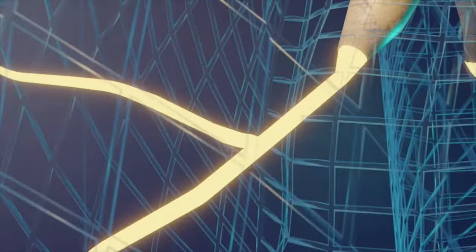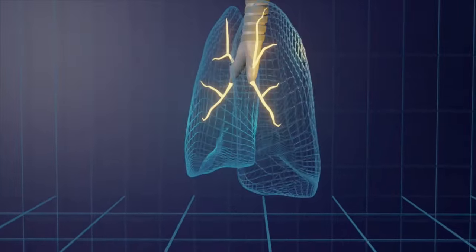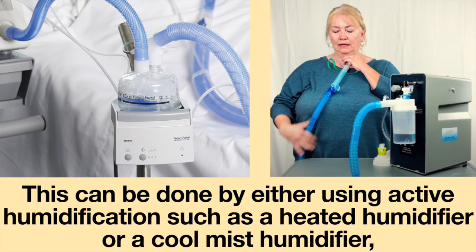To prevent the airway from drying out, it is important to keep the airways moist. This can be done by either using active humidification, such as a heated humidifier or a cool mist humidifier, or using passive humidification, such as a heat and moisture exchanger.